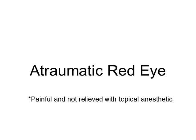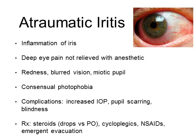Moving on to atraumatic red eye conditions that are painful and not relieved by topical anesthetics. Atraumatic iritis is an inflammation of the iris, also called anterior uveitis. You get deep eye pain not relieved with anesthetic drugs, redness, blurred vision, and a miotic or constricted pupil. You may also notice consensual photophobia — shining light in the unaffected eye causes pain in the affected eye. Complications include increased intraocular pressure, pupillary scarring, and blindness. Treatment is steroids (drops or oral), cycloplegics, NSAIDs, and emergent evacuation. Iritis can also occur due to trauma with similar symptoms and treatment.